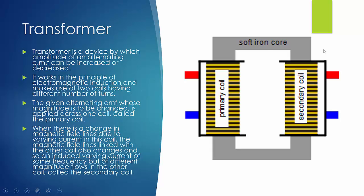As you can see in this figure, a transformer has a primary coil and a secondary coil winding. The alternating voltage whose magnitude is to be changed is supplied at the primary coil terminals, and the desired output voltage is obtained at the terminals of the secondary coil.